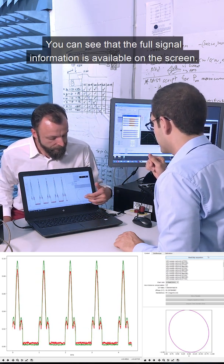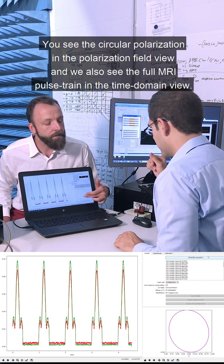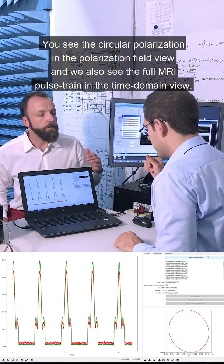As you can see the full signal information is available on the screen. You see the circular polarization in the polarization field view and we also see the full MRI pulse train in the time domain view.